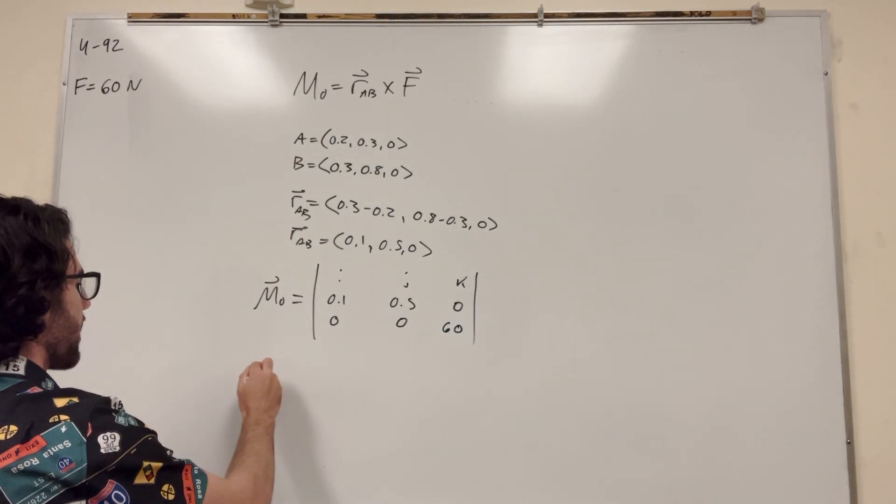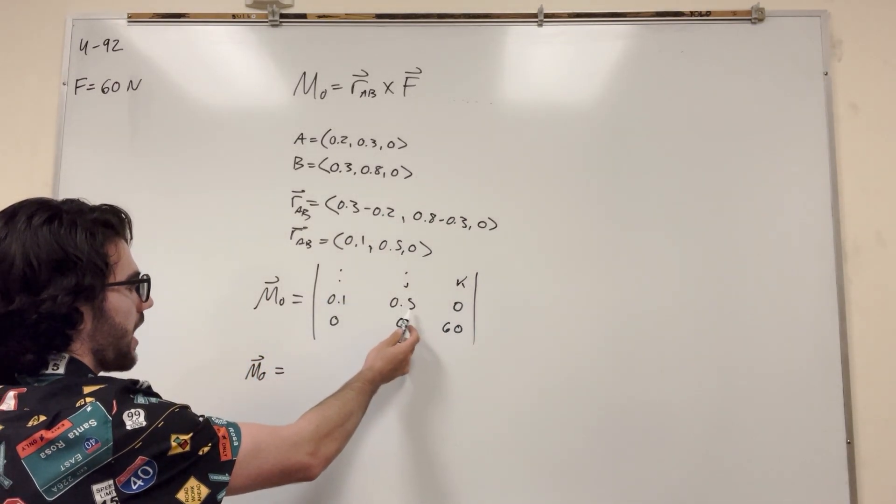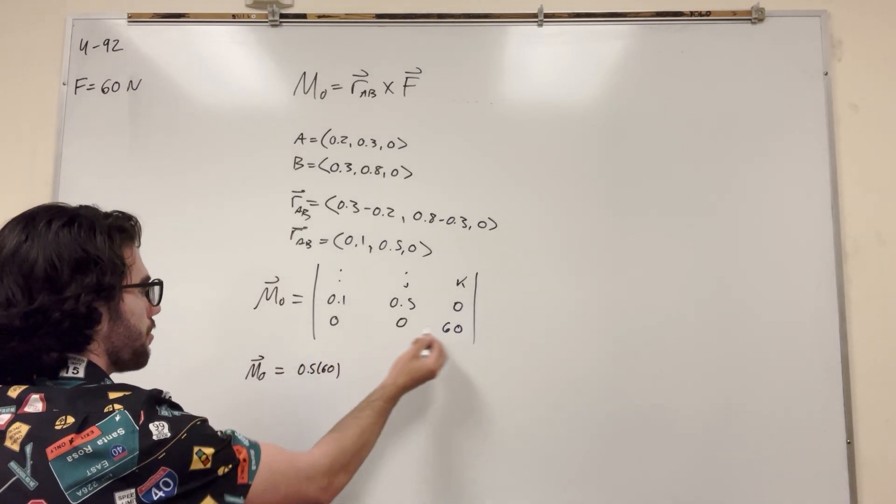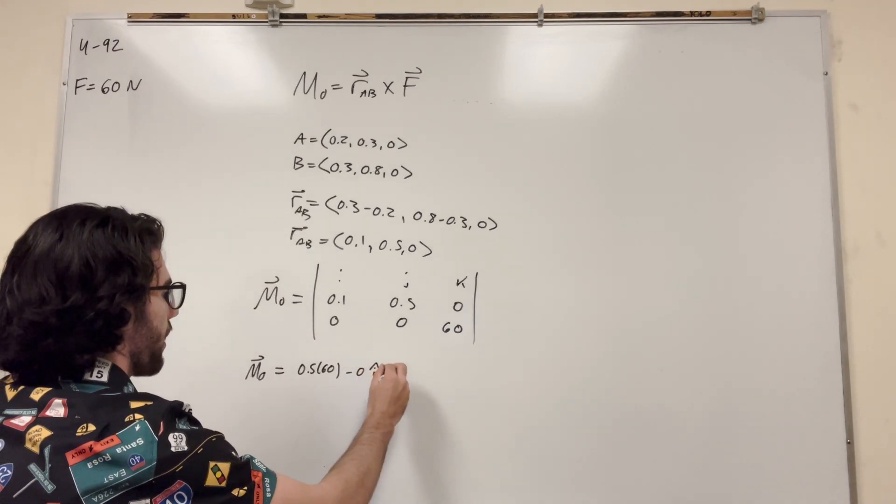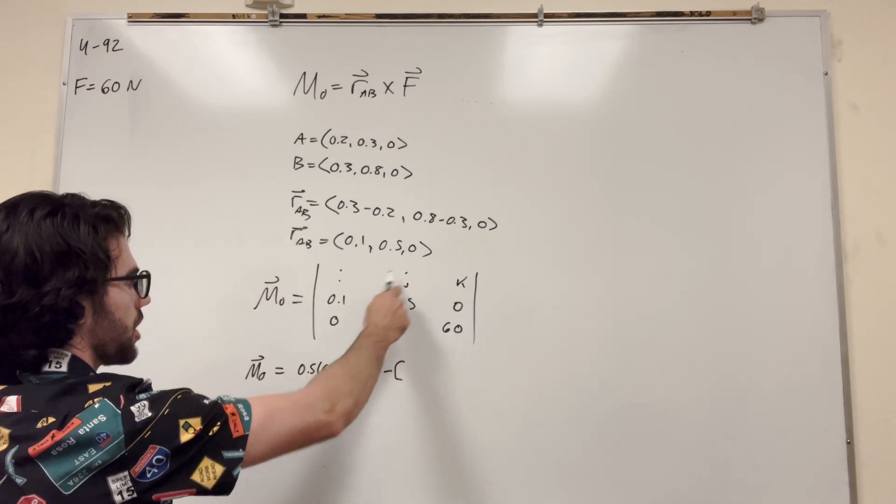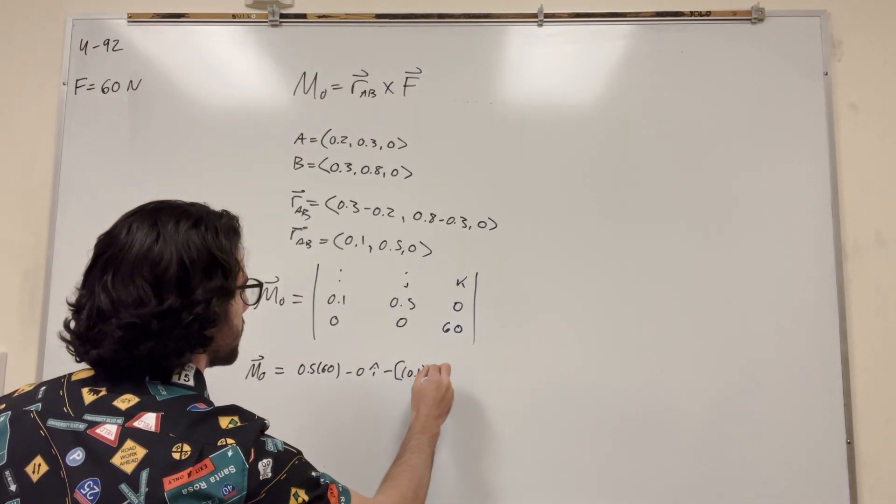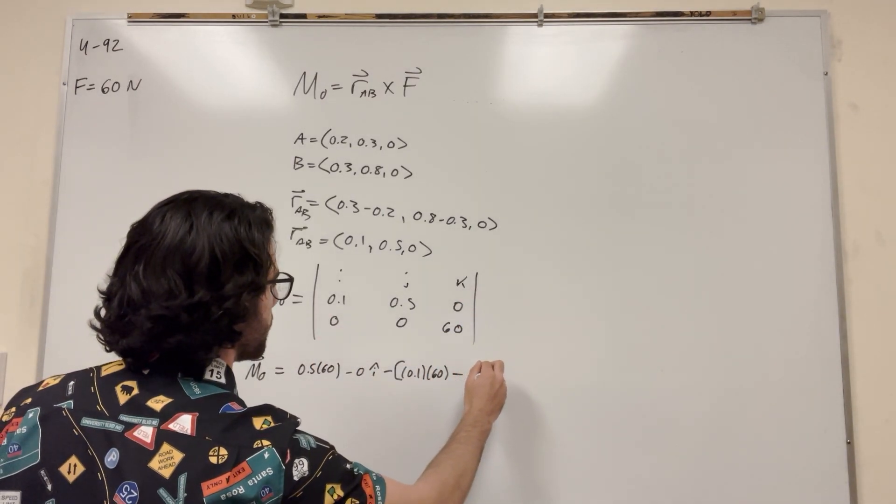So if we do this cross-product, so we're going to take I, and it's going to be 0.5 times 60, minus 0 times 0, I. So then we have to subtract all of J. So then J, we're going to take J, and it's going to be 0.1 times 60, minus 0 times 0, J.